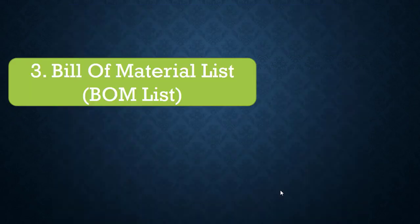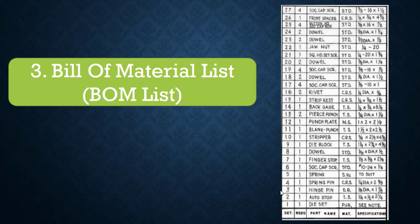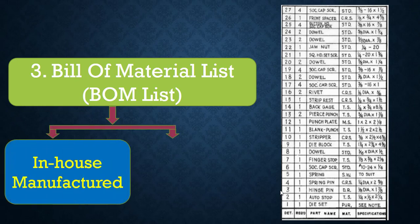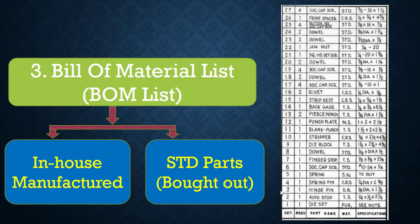Number 3: Bill of material — that is the BOM list. Every drawing you might have seen this list, which has two types. One is in-house manufactured items. Second is standard parts, which are called bought-out parts. In-house manufactured parts include forming punch, blank holder, cavity, strippers, and other plate items. Standard parts are procured directly from standard part manufacturers, such as bolts, dowel pins, standard punch, die button, retainers, standard cam units, coil springs, wear plates, etc.